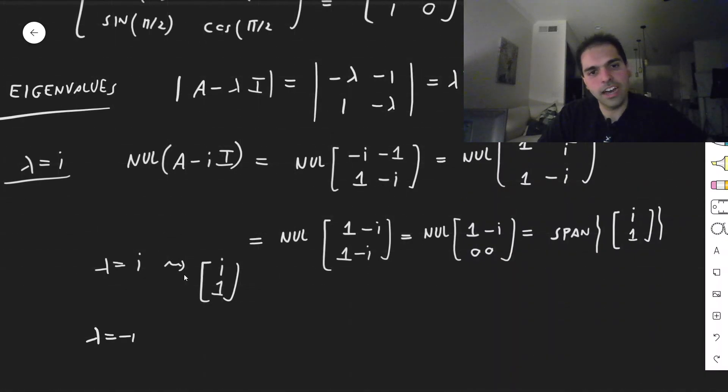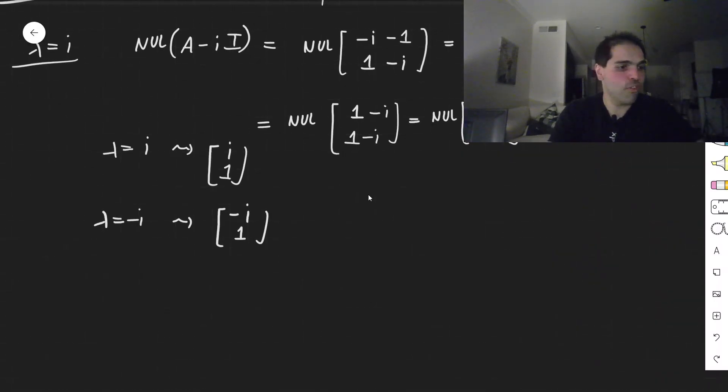And the beautiful thing is, for lambda equals minus i, you just do the conjugate. So it becomes minus i, 1. And therefore, our rotation matrix, so 0 minus 1, 1, 0, that becomes i, 1, minus i, 1.